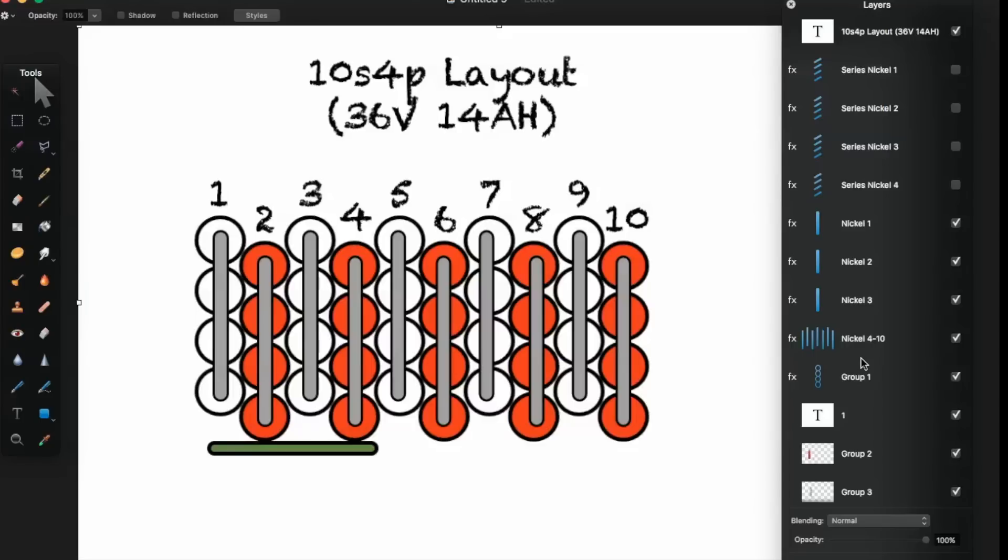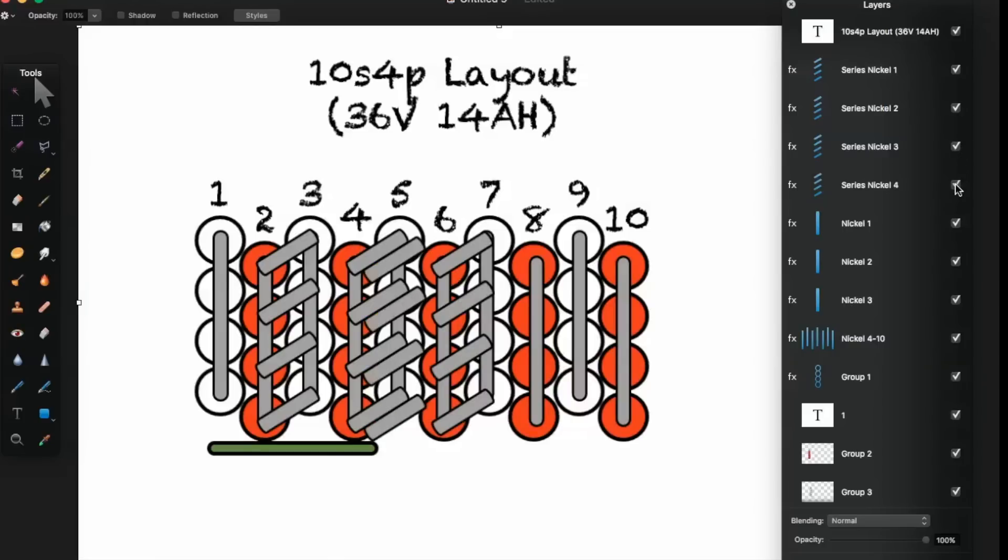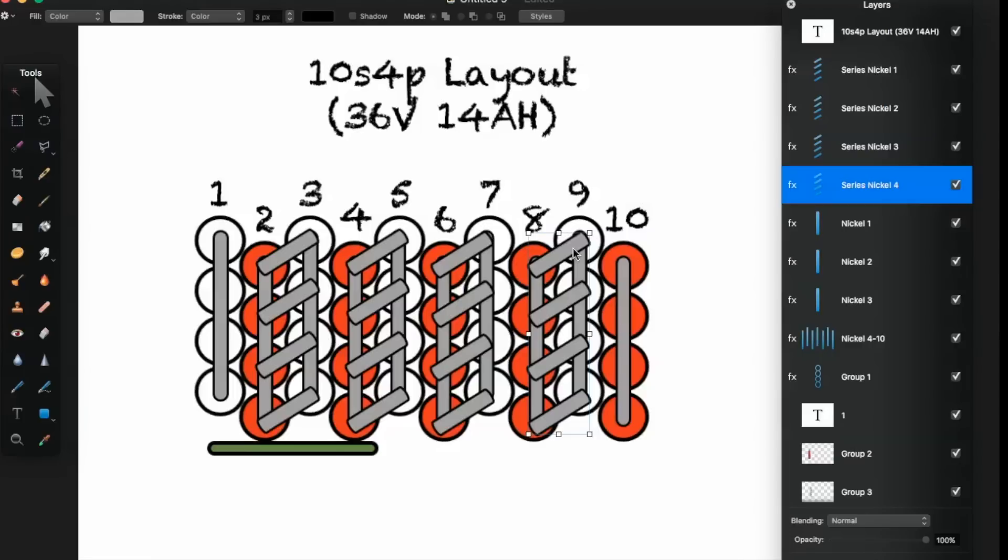Then I'm going to need to go back and start doing my series connections. So that's where I'll start here with my first series connection, which will actually go from the positive end of the second cell to the negative end of the third cells. I'm not going to do this connection here because this is the negative end of the entire battery. I'm going to continue skipping the three to four because that's going to be on the other side of the battery. I'm going to do my next series connection from four to five. And then my next series connection, six to seven. And then eight to nine.